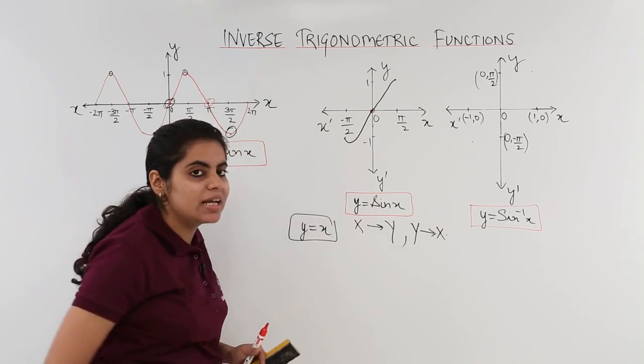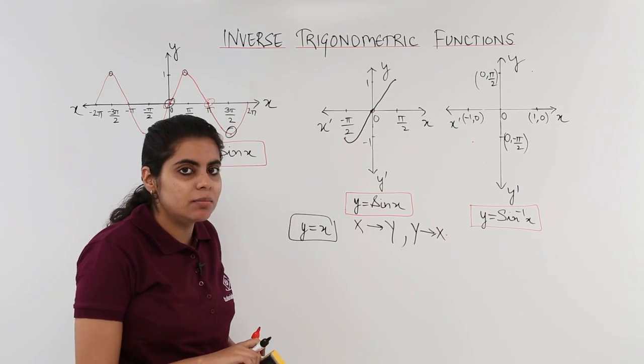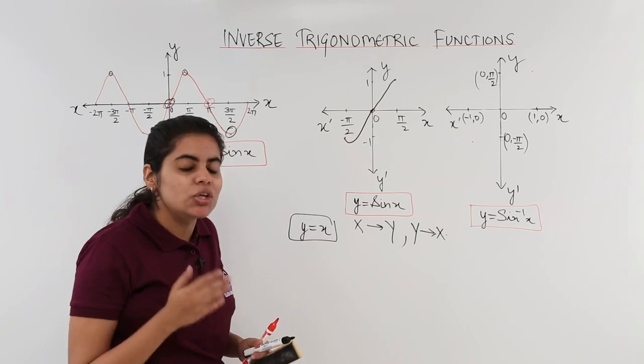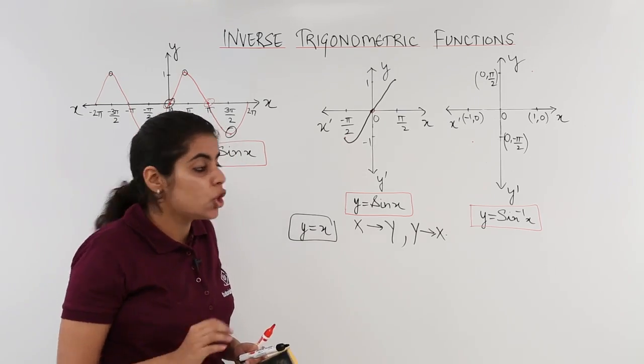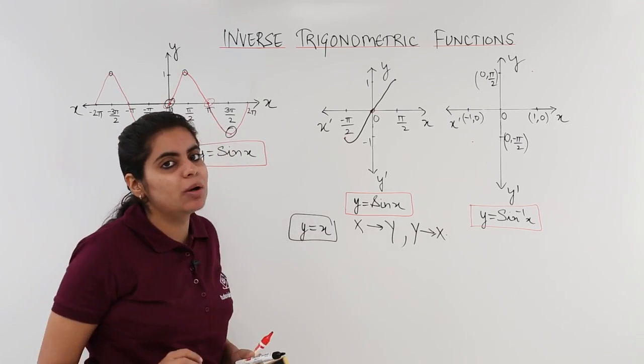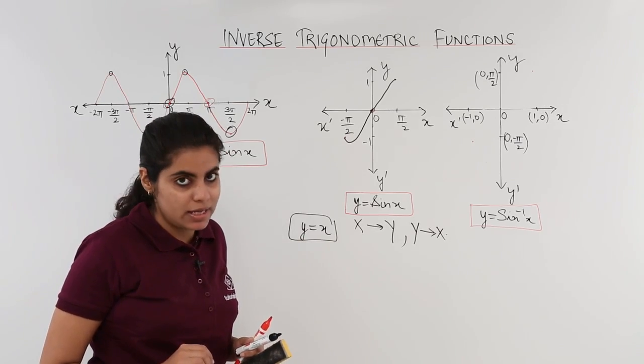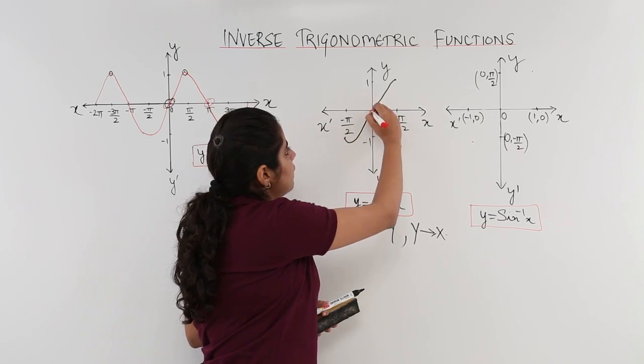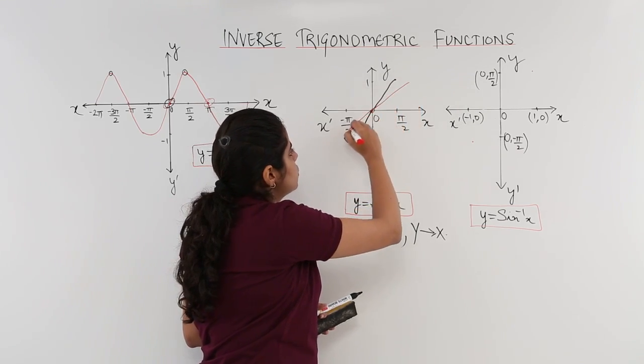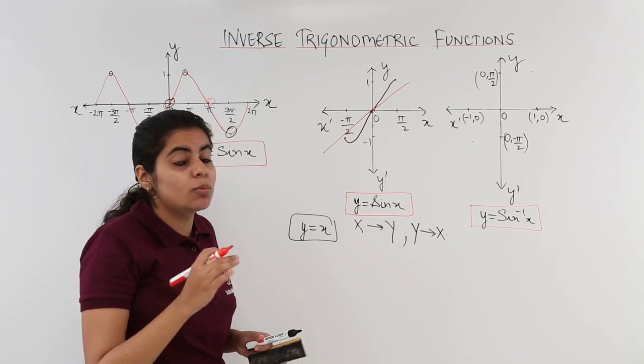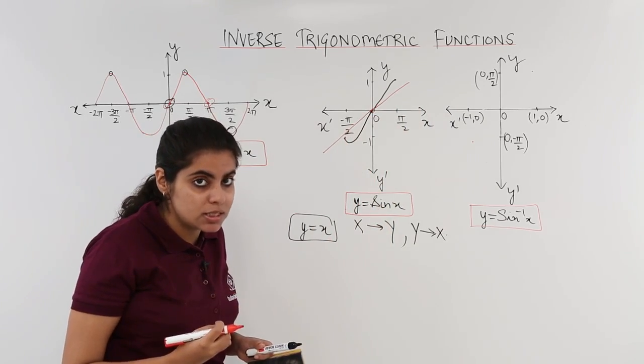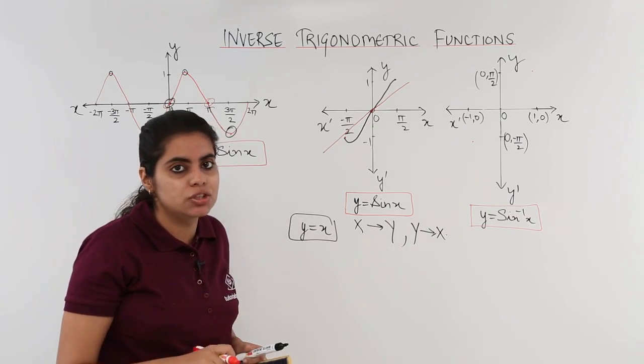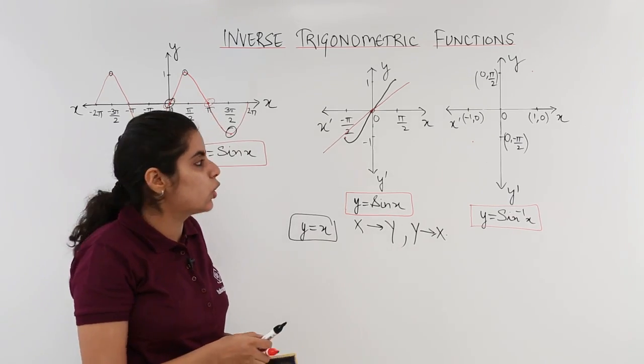The second thing is what? You have to take the reflection about the line y equals x. We know the graph of y equals x. It is nothing but a line which is at 45 degrees to the x-axis. You just take the mirror image or the reflection about the line y equals x. So, what happens? I know what is my line y equals x. My line y equals x is nothing but a very straight line. So, my task now is to draw the graph in such a manner that I draw the reflection about this line. Let's draw it.